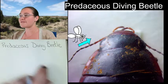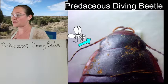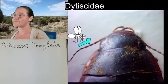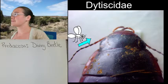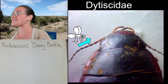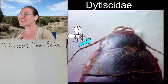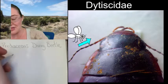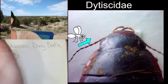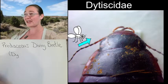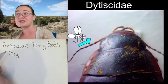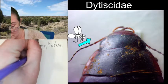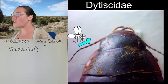Predacious diving beetles have their own family — they are in the family Dytiscidae, spelled D-Y-T-I-S-C-I-D-A-E. Dytiscids is their family name. All predacious diving beetles are dytiscids, and that comes from the Greek word dytikos, meaning 'to dive.'